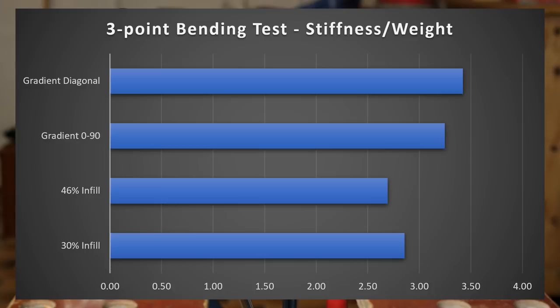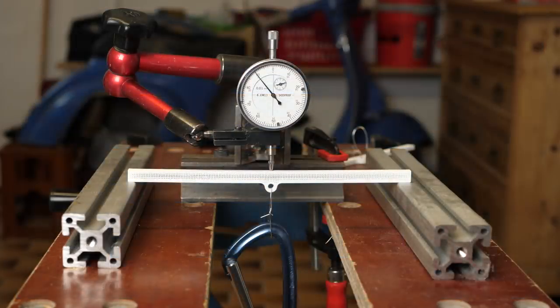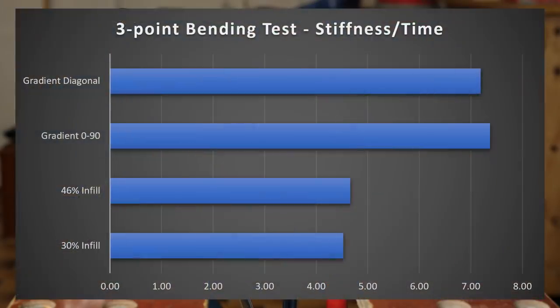The results are really nice and show that the stiffness at the same weight is almost 30% higher with gradient infill. For this, I compared the beams that had the same weight. If we take a look at the stiffness that we can achieve during the same amount of printing time, we are almost 60% stiffer. Here I compared the 30% normal infill beam to the gradient infill parts because with this method we don't add any additional printing time.